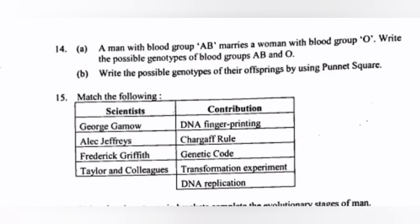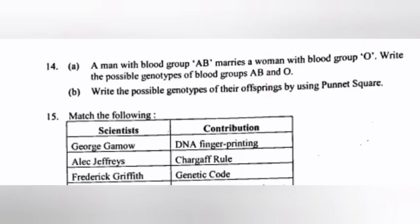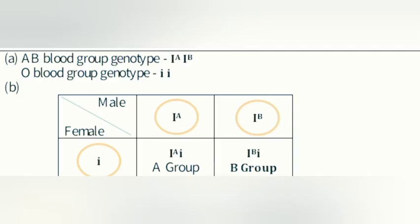Question 14: A man with blood group AB marries a woman with blood group O. Write the possible genotypes. AB blood group genotype: capital I-A, capital I-B. O blood group genotype: small i, small i. Write the possible genotypes of their offspring using a Punnett square.